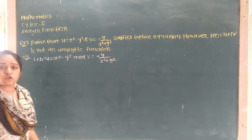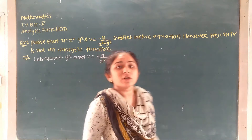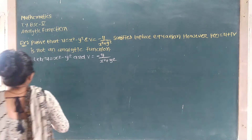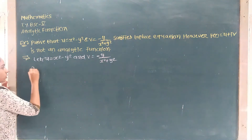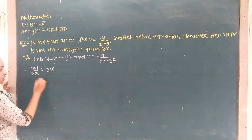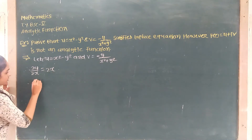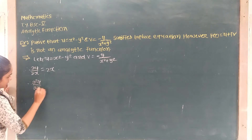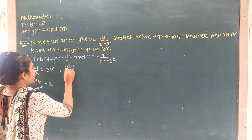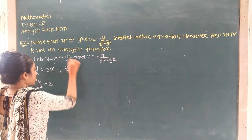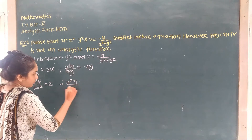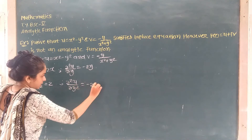With respect to u, the second derivative gives us: x squared u is equal to minus x squared. Then del u by del x with respect to x gives minus x. The second derivative with respect to x gives del squared u. Then del u by del y: the first derivative with respect to y is minus 2y, and the second derivative del squared u upon del y squared is equal to minus 2.